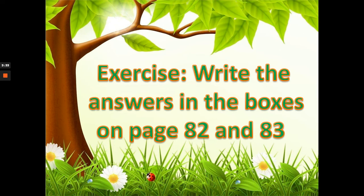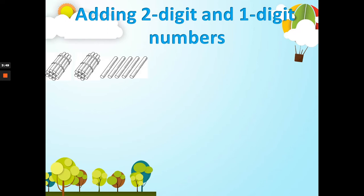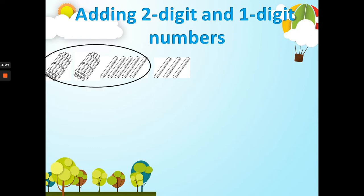When you are ready for our next topic, let's go to adding two-digit and one-digit numbers. For example, we will use bundles again. We have here two bundles and five sticks, and another three sticks. Two bundles and five sticks equals 25, and 25 is a two-digit number.